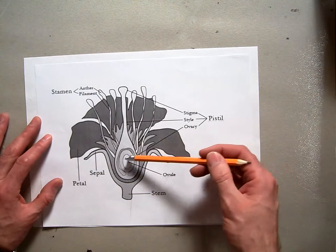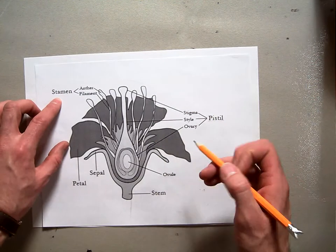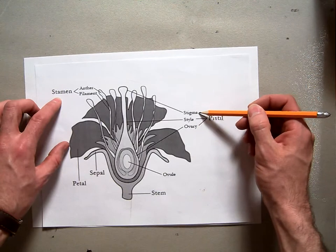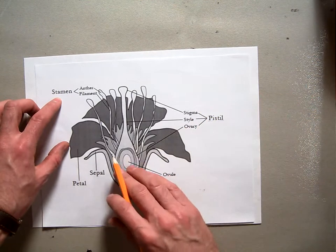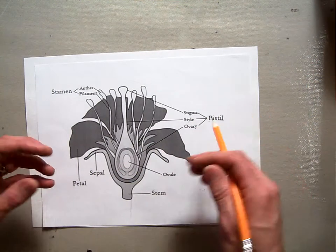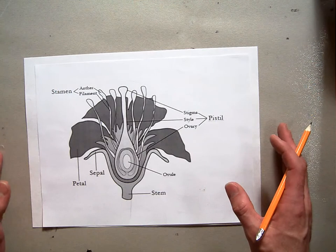And then within the rest of it comes the stamen, which is part of the pistil. The pistil is all of the stuff together: the stigma, the style, and the ovary, which is all of the stuff that makes the pollen, which germinates more flowers next year.